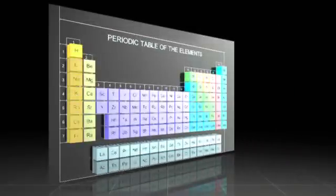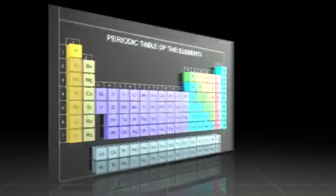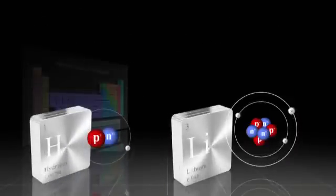Elements in the same column have the same number of electrons in their outermost shells. Hydrogen and lithium each have one electron in their outermost shell.